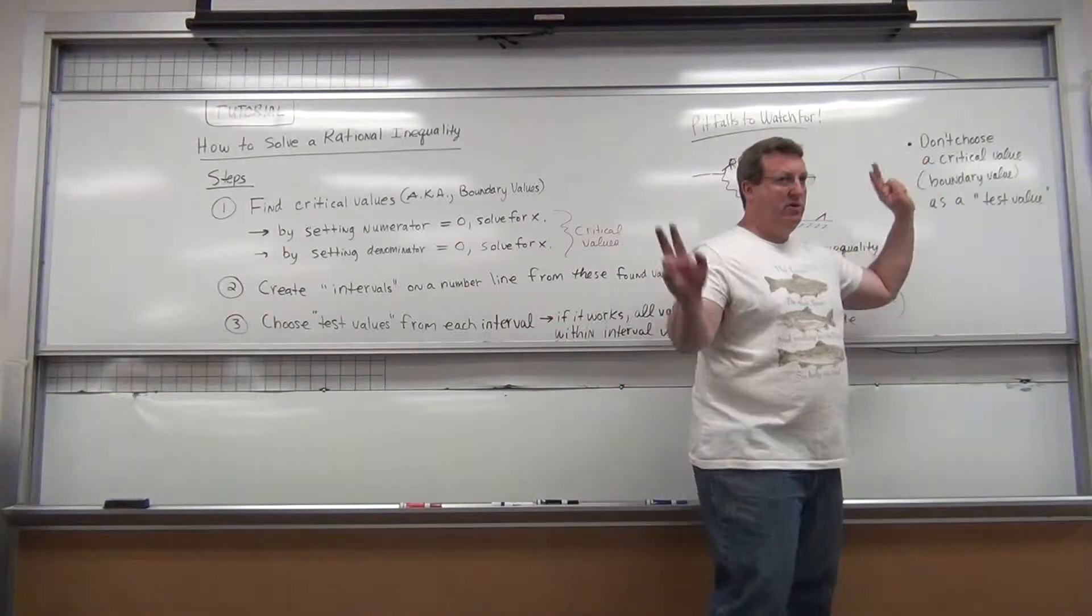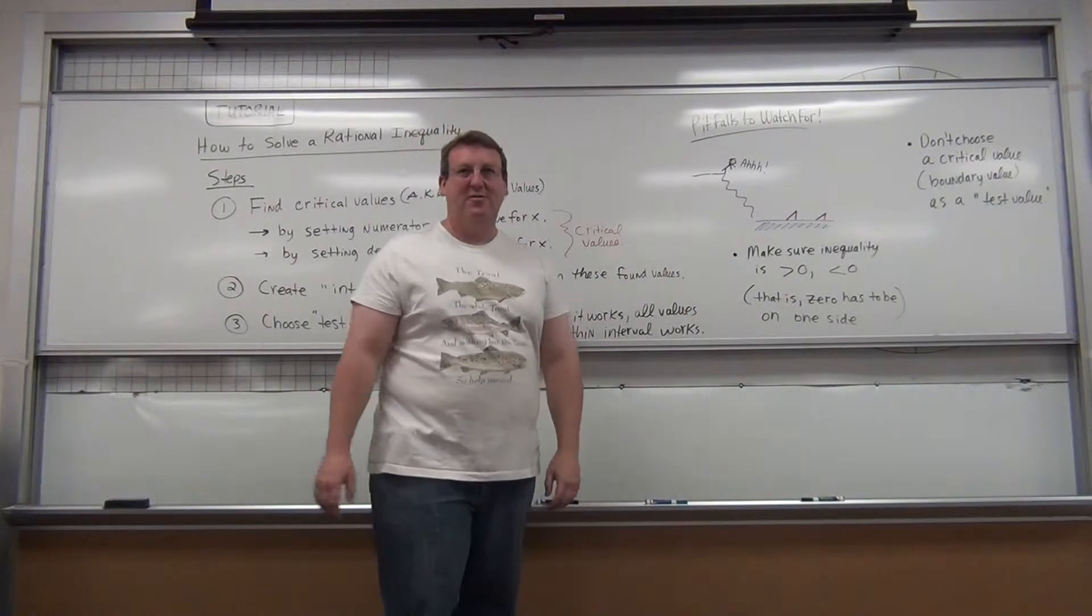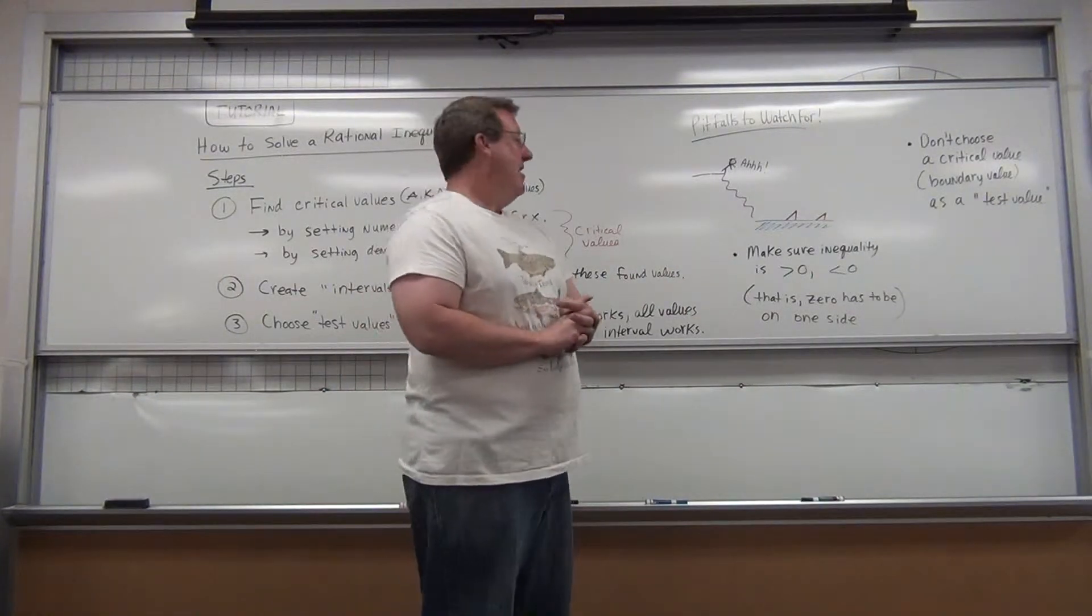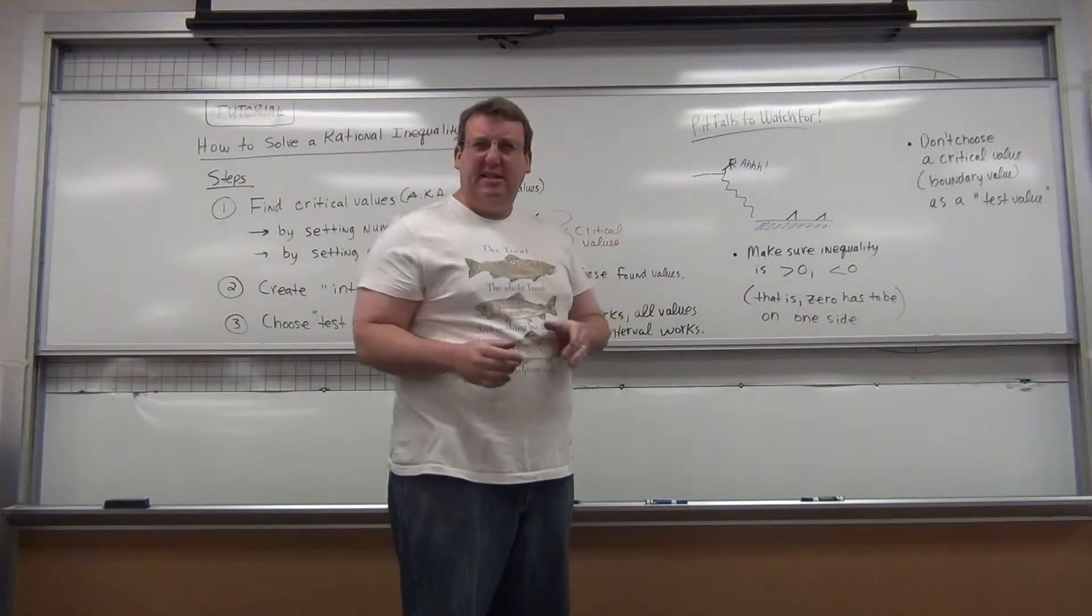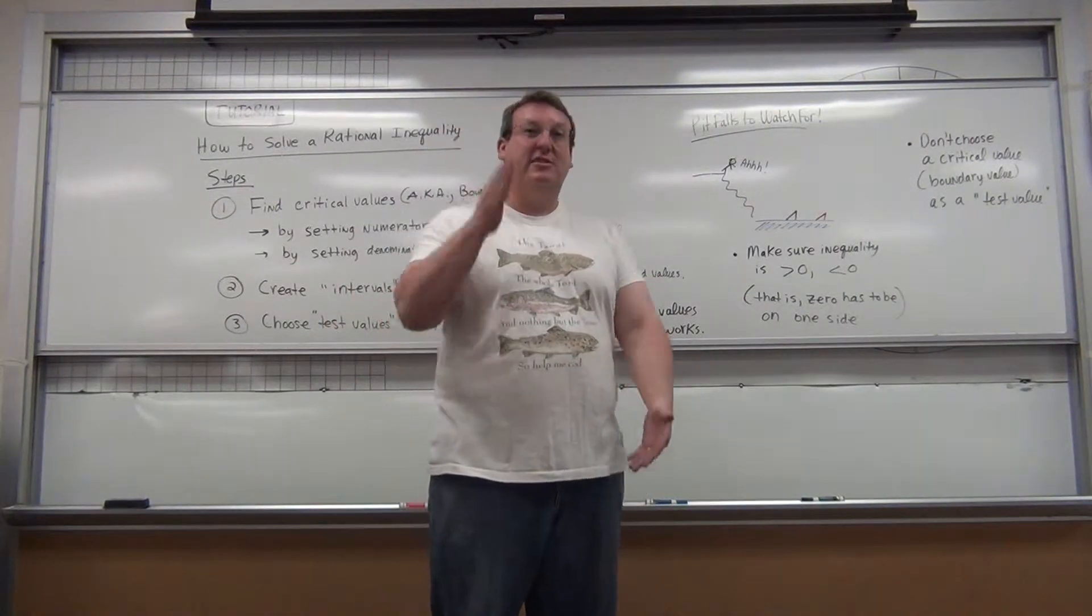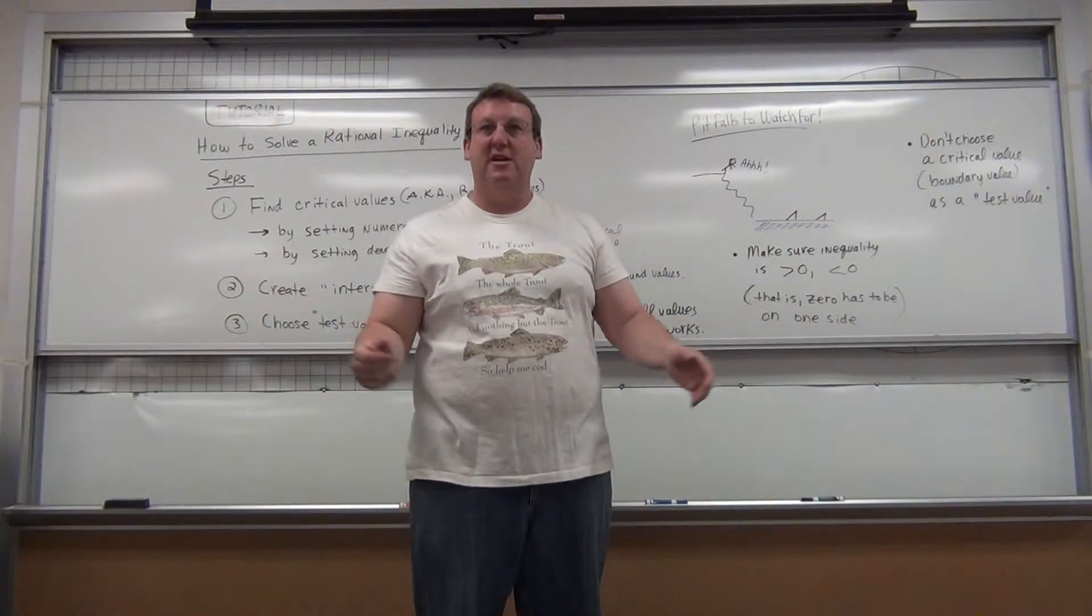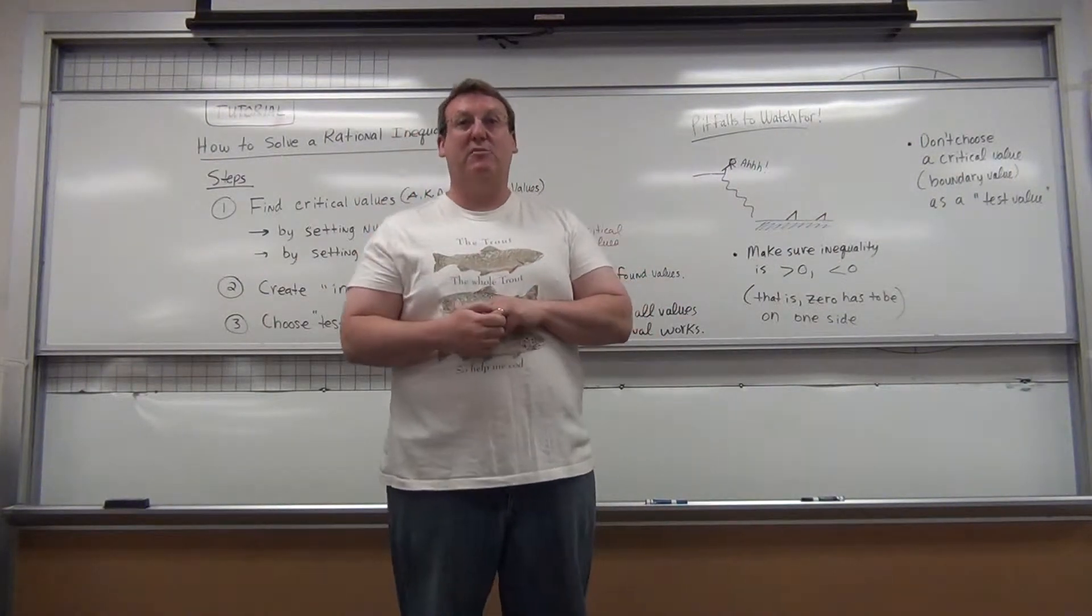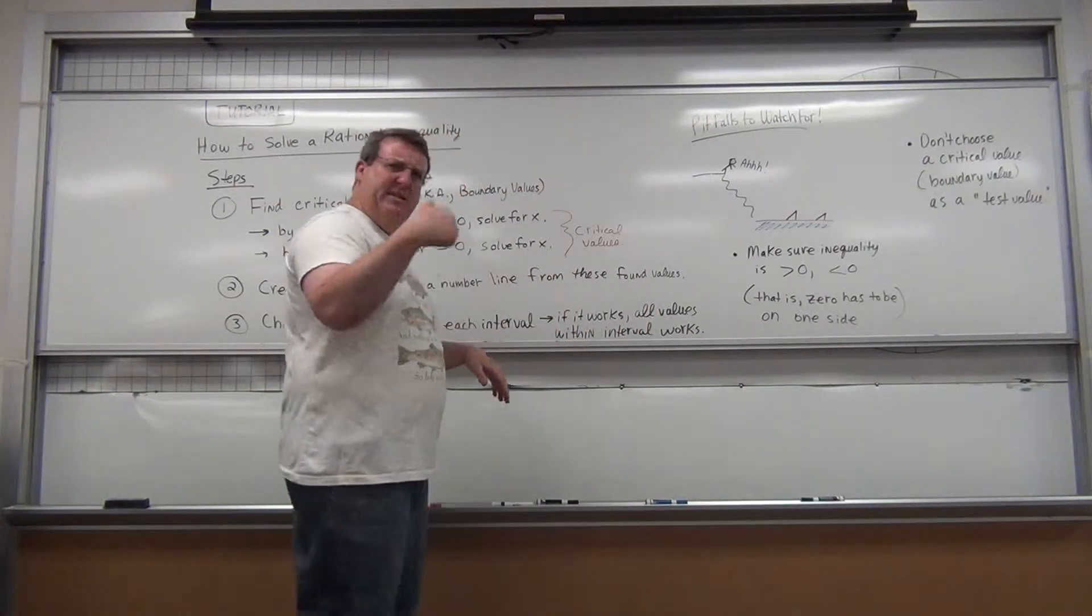So make sure the zero is on one side. Then, when you choose your test value, don't choose a critical value or boundary value. What's another thing I can remind you of? When you look at a number line, what's your instinct when you touch a number line? Yes, you try to draw a zero to split the number line into two pieces, positive and negative. Do not put zero on the number line unless it actually becomes a critical value. So let's get busy and check this out.